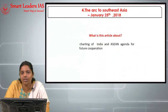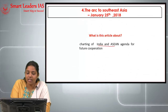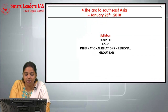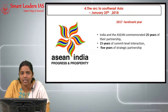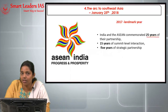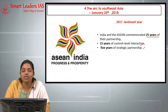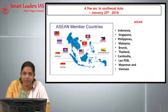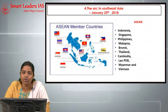The next article came on 25th January — 'Art to South Asia' — speaking about charting India-ASEAN agenda for future cooperation. In our GS2 syllabus on international relations and regional groupings, ASEAN is directly relevant, especially because 2017 is a landmark year for India — India and ASEAN commemorated the 25th year of their partnership, 15 years of summit-level interaction, and 5 years of strategic partnership. ASEAN is a group of 10 countries: Indonesia, Singapore, Philippines, Malaysia, Brunei, Thailand, Cambodia, Laos, Myanmar, and Vietnam.